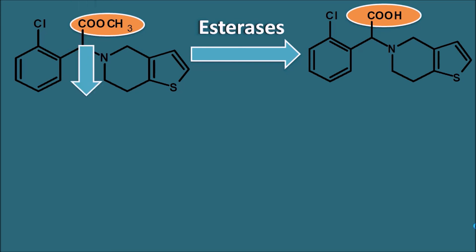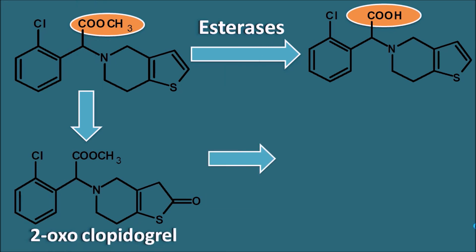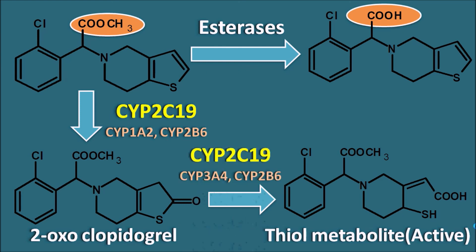Clopidogrel is metabolized into an intermediate metabolite called 2-oxoclopidogrel, which is then further metabolized into a thiol metabolite — the active form of clopidogrel. These two steps are mediated by the cytochrome P450 system. The first step is mediated by various CYP450 enzymes including CYP2C19, CYP1A2, and CYP2B6, where CYP2C19 plays the major role. The second step is also mediated by several enzymes where CYP2C19 again plays the key role.